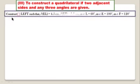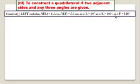Construct quadrilateral LEFT such that: length of EL is equal to 4.5 centimeters, length of EF is equal to 5.5 centimeters, measure of angle L is equal to 60 degrees, measure of angle E is equal to 100 degrees, and measure of angle F is equal to 120 degrees. See this construction.